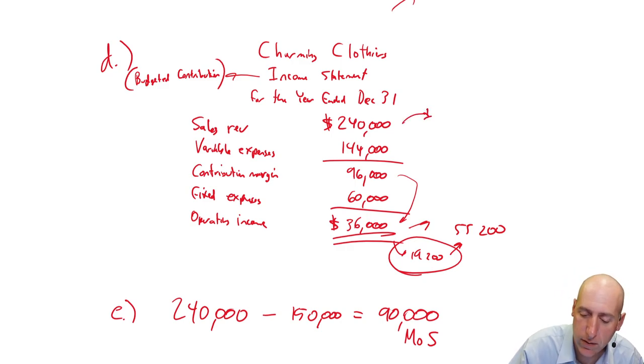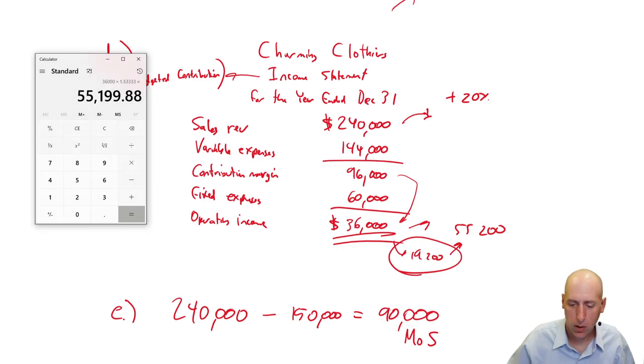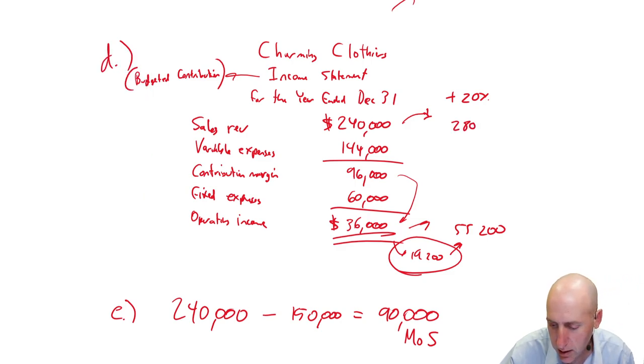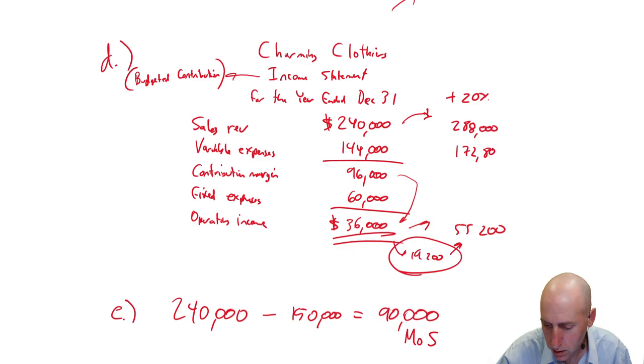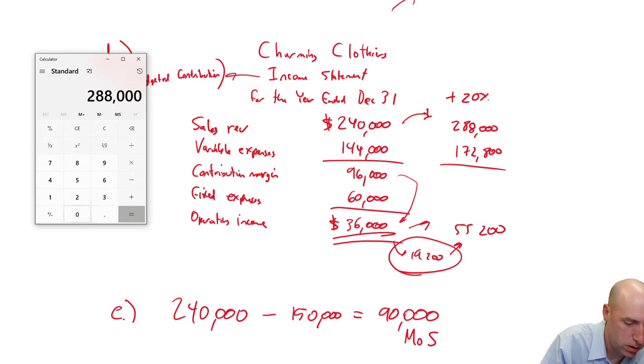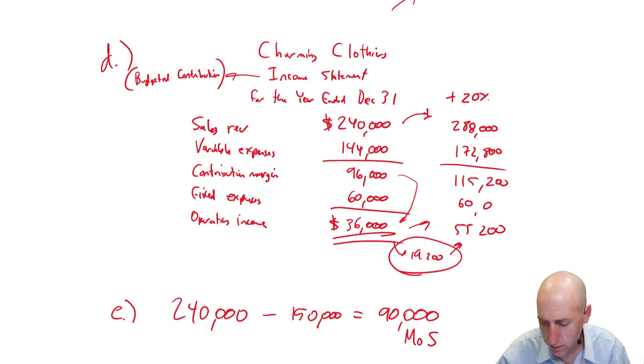So again, if sales revenue, let's do a new plus 20% income statement here. This was not asked for. This is just sort of proving to you that it works. So $240,000 goes up by 20%, so times 1.2 to increase it by 20%, leaves us at $288,000. Our variable expenses will also then go up by 20%. So $144,000 increasing by 20%, $172,800. $288,000 minus $172,800 is $115,200. If our fixed expenses remain at $60,000, look at that. It works.